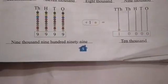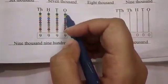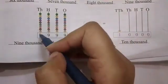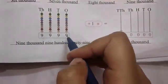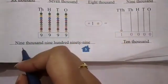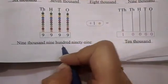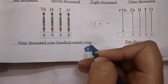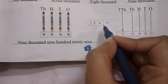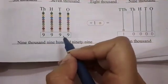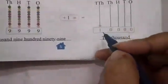At the last Abacus, there are nine beads at all four places. The number formed is 9,999, and its number name is nine thousand, nine hundred ninety-nine. When we add one to nine thousand nine hundred ninety-nine, we get ten thousand.